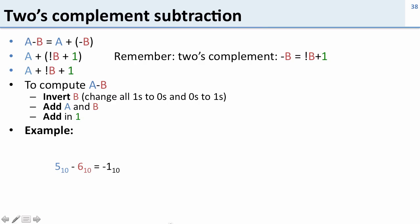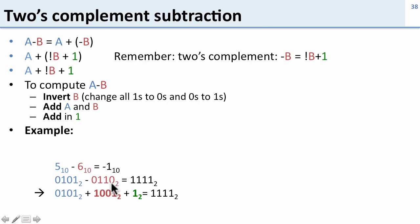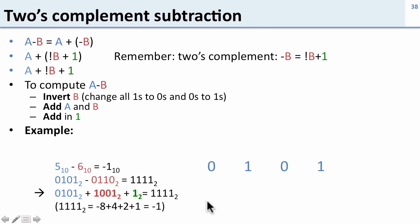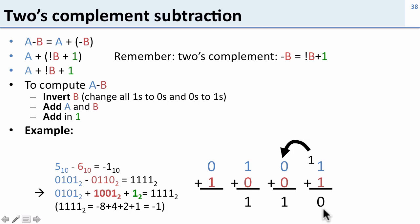Let's take a look at an example. I want to do 5 minus 6, which I expect to be minus 1. Here's 5: 0 1 0 1 (4 plus 0 plus 1), and here's 6: 0 1 1 0 (4 plus 2). I want the result to be 1 1 1 1, which is minus 8 plus 4 plus 2 plus 1, equaling negative 1. To do this I first take 6 and invert it — change all zeros to 1 and ones to 0 — then add in 1. Here's our first value 0 1 0 1 and here's 6 inverted. I add them together, get a carry, then add in 1, giving the final result 1 1 1 1.